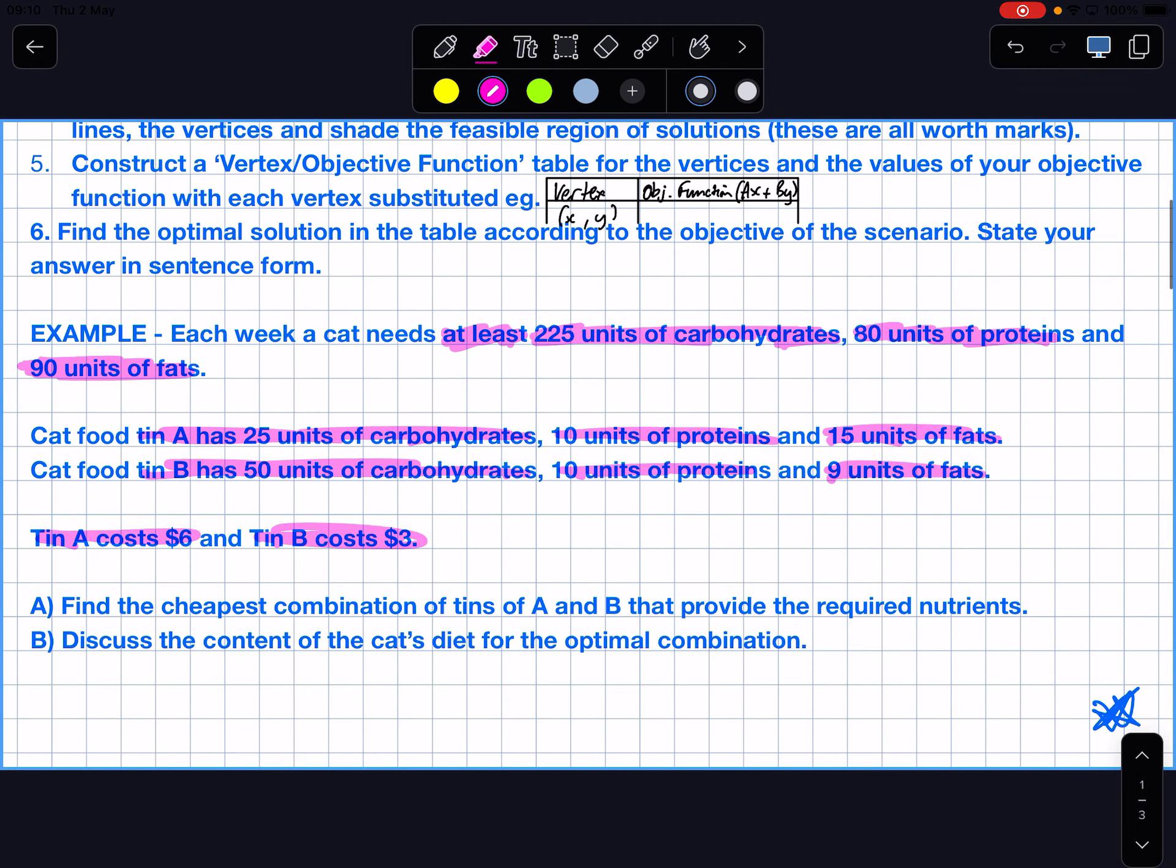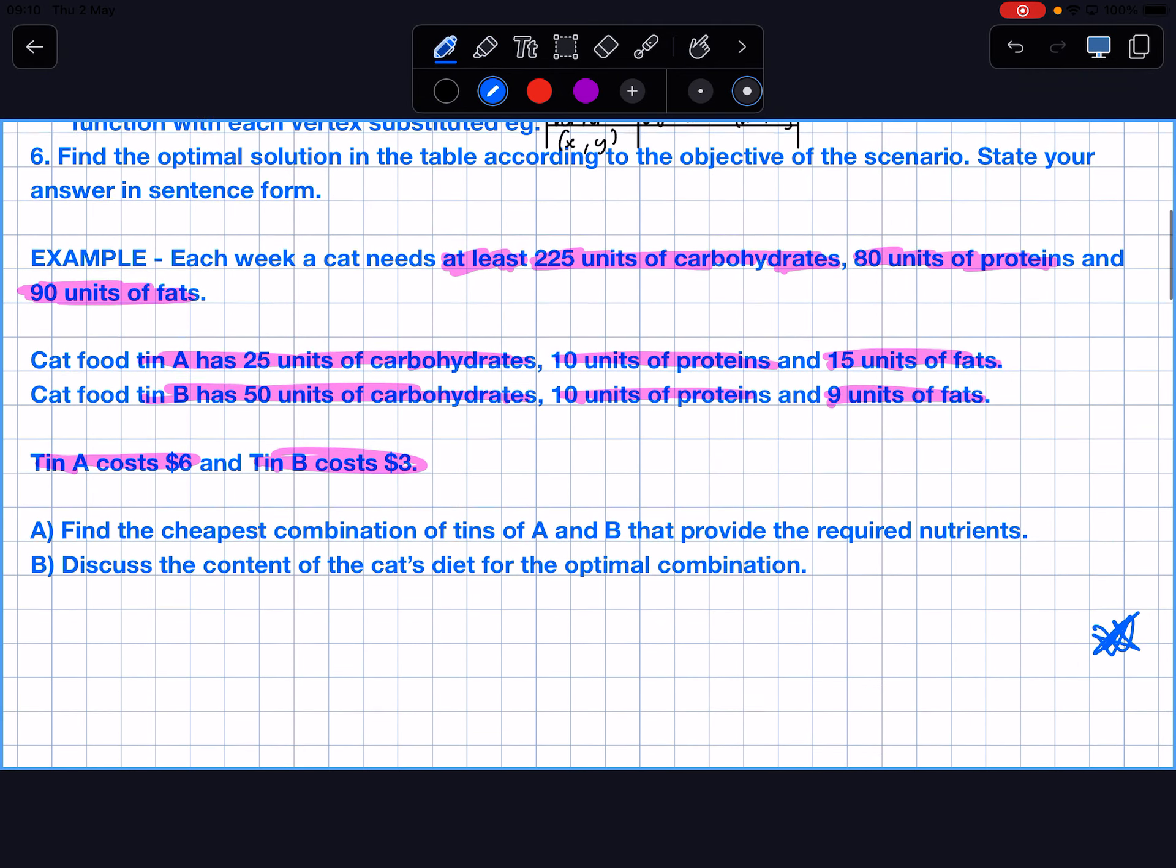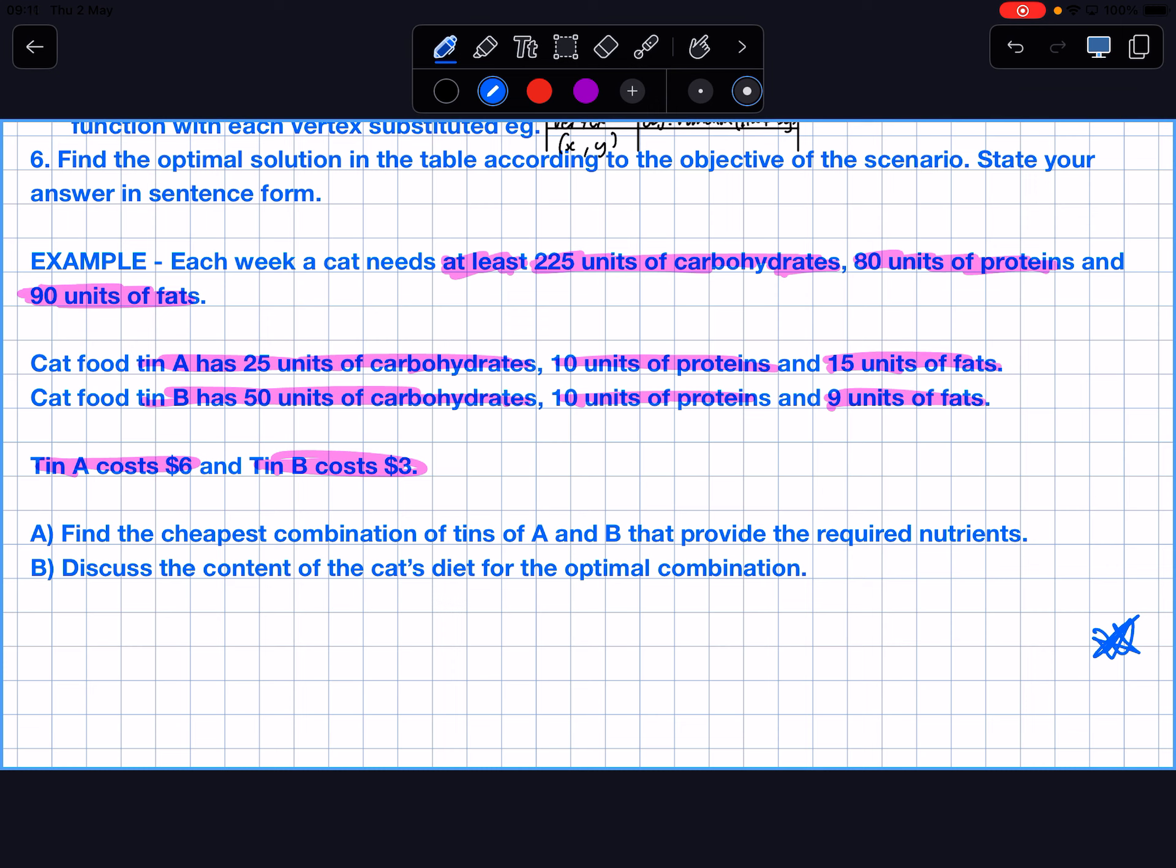With these steps, what should I make my X and Y? What are the two things that I'm finding the number of to optimize? Let X equal number of tin A. Y would be number of tin B. That is step one done. I decided what X and Y were.